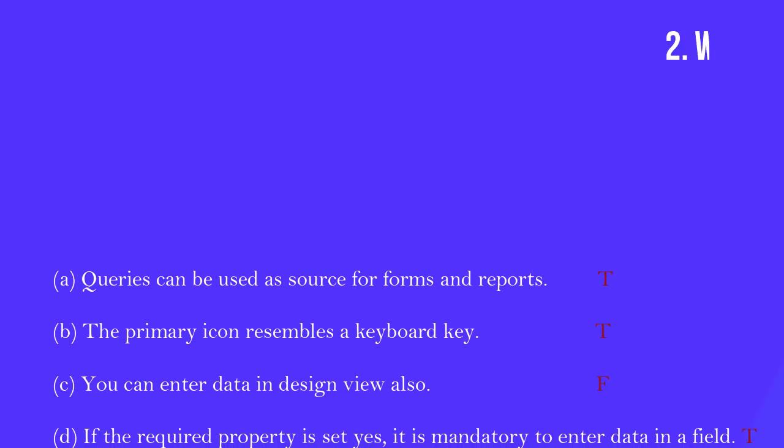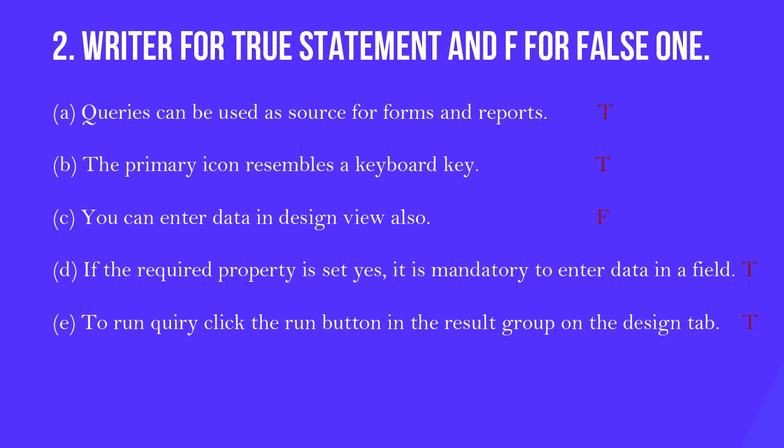Second question: write T for true and F for false. A — a query can be used as a source for forms and reports: True. B — the primary key icon resembles a keyboard key: True. C — you can enter data in design view: False. D — if the required property is set, it is mandatory to enter data in a field: True. E — to run a query, click the run button in the results group on the design tab: True.